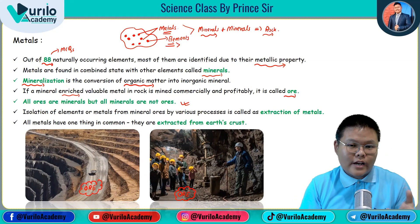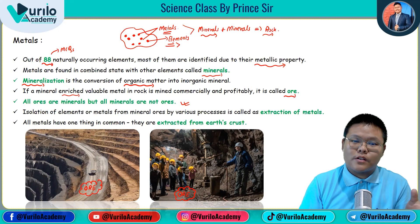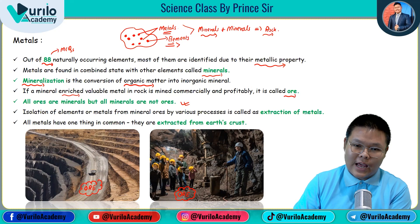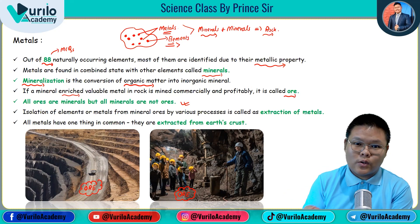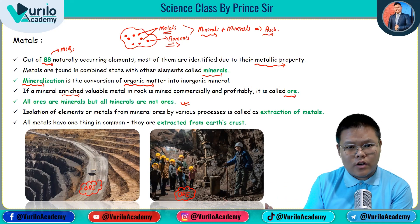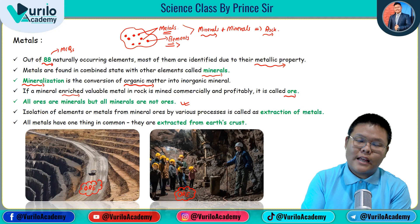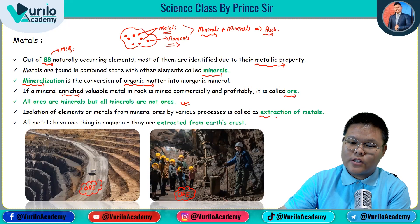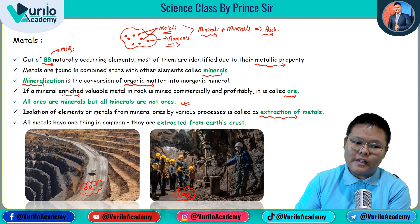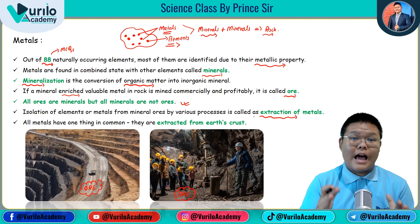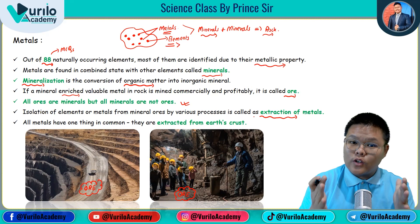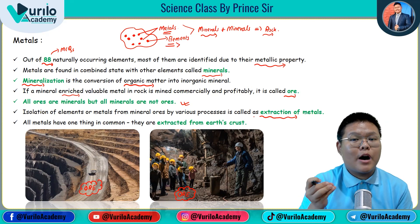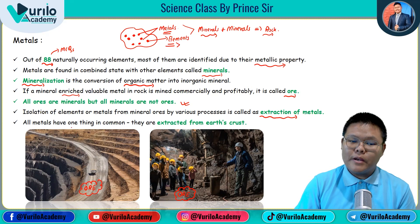From minerals we extract metals and some other types of elements. Metals are what we need to extract from those minerals — specifically from the ore. The isolation of elements or metals from minerals and ores by various processes is called extraction of metals. All metals have one common thing: they are extracted from the ore.